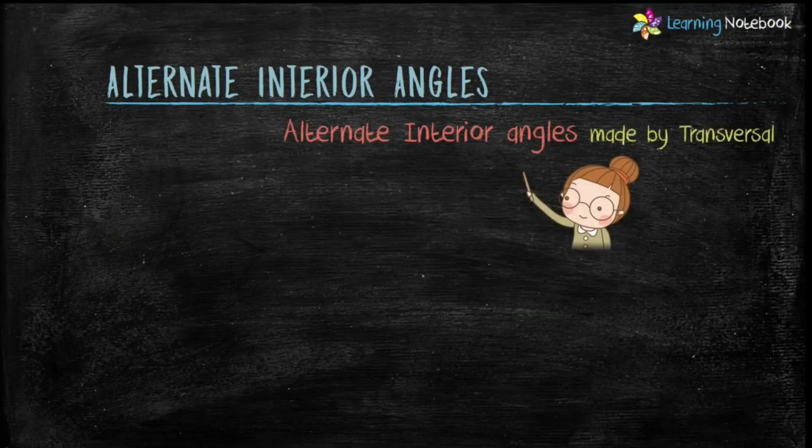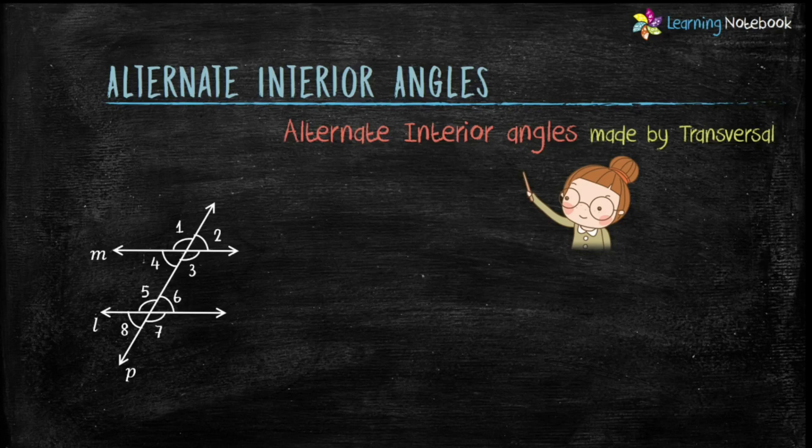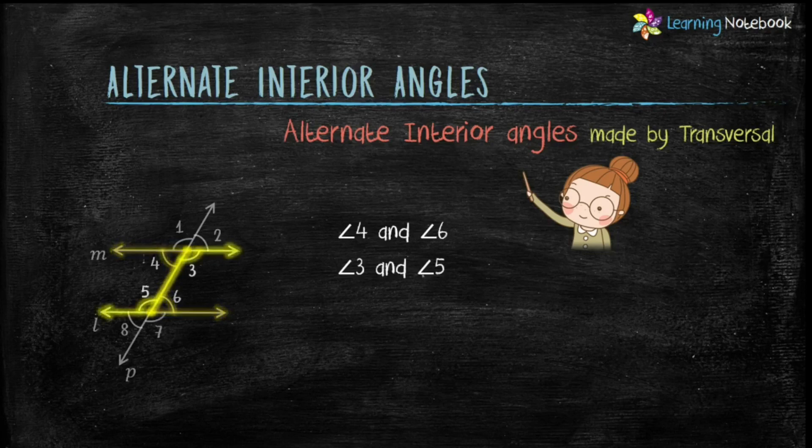Let's first quickly revise what are alternate interior angles made by transversal. Here M and L are two parallel lines and P is the transversal. So, angle 4 and angle 6 and angle 3 and angle 5 are alternate interior angles.